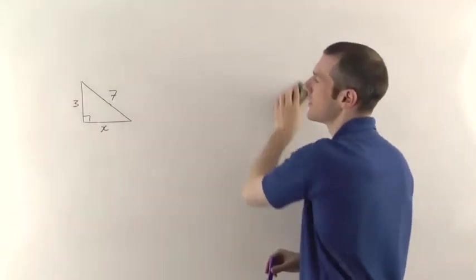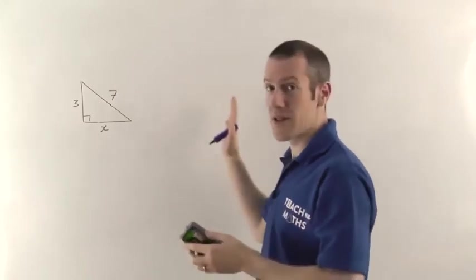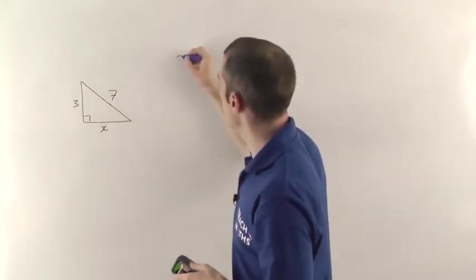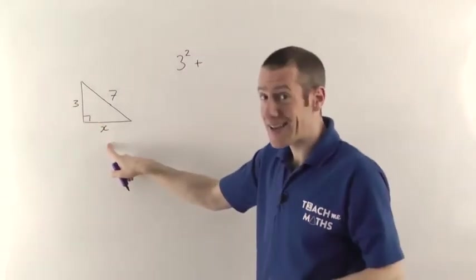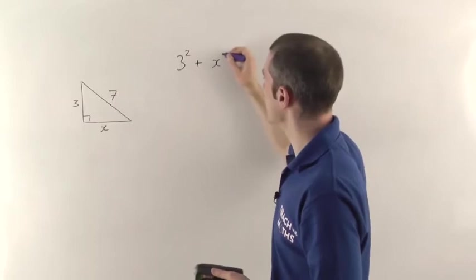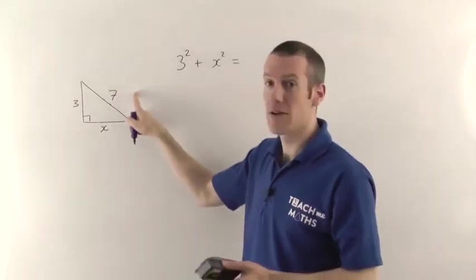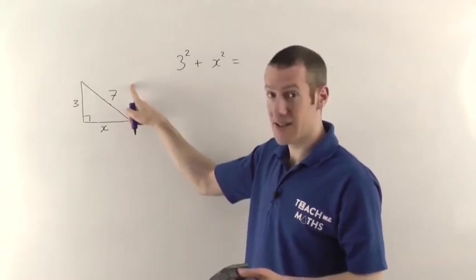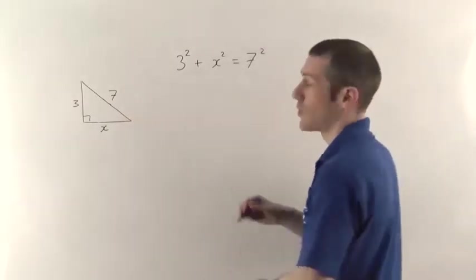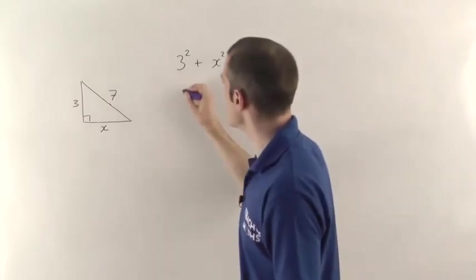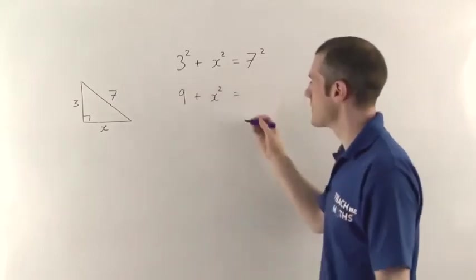So if we get rid of that one, now the 7 squared is going to be the thing that's by itself. So we've got 3 squared, the area of the square that would be here, plus x squared, we don't know what x is yet. When you add those together, you're going to get the area on this side, the square on this side, so that's going to be 7 squared. So work out what you know, so 3 squared is 9, and 7 squared is 49.